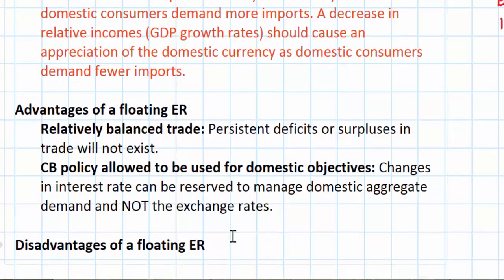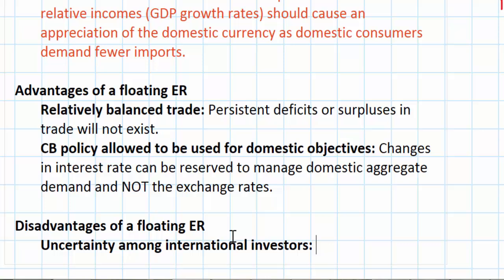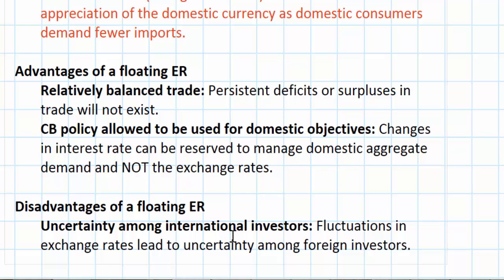These are the two primary advantages of a floating exchange rate system, but that doesn't mean this system has no disadvantages. Two disadvantages are uncertainty and volatility among international investors. If a developing country is hoping to attract foreign investment in its infrastructure or manufacturing sector, wild fluctuations in exchange rates lead to uncertainty about how well investments will pay off in the future. Investors who are uncertain about whether a currency will appreciate or depreciate might hesitate to invest in a developing country. This is why we often see less developed countries manage their exchange rates against major currencies like the US dollar or the euro — to attract investment from America or Europe. A floating exchange rate tends to be more volatile than a managed exchange rate, and volatility is clearly not desirable among international investors.